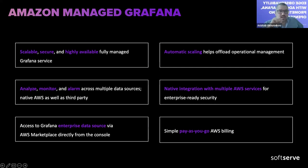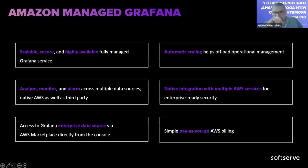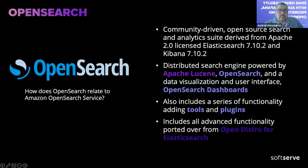Amazon Managed Grafana is a scalable, secure, highly available, fully managed Grafana service that automatically scales and helps offload operational management. You can analyze, monitor, and create alarms across multiple data sources — native AWS as well as third-party — with native integrations for enterprise-level security and access to Grafana Enterprise data sources directly from the AWS Marketplace console.